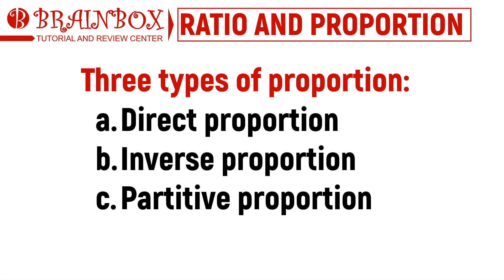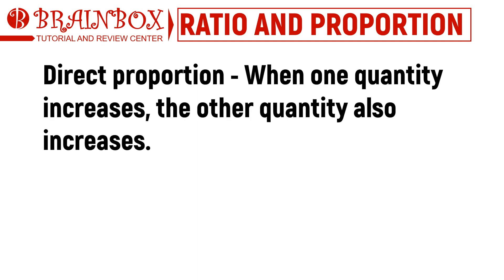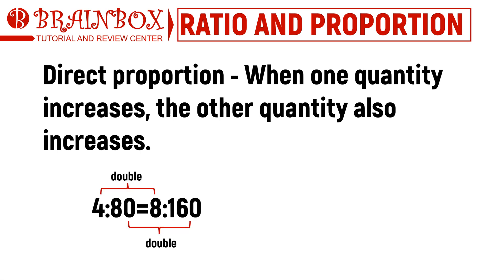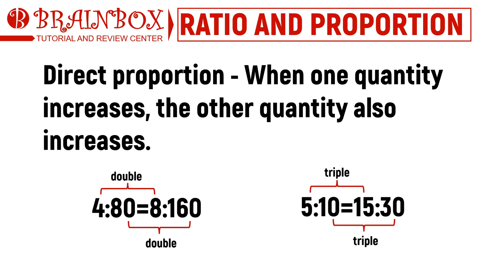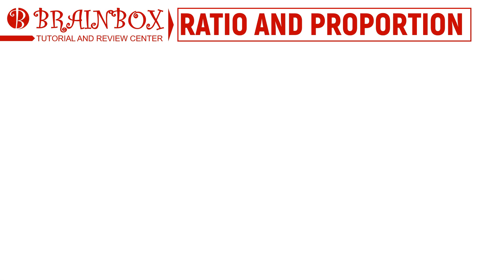In direct proportion, one quantity increases with the other quantity at the same rate and vice versa. For instance, if we double the quantity of one ratio in a proportion, the other quantity will double as well. The same is true if we triple the quantity of one ratio in a proportion. Here is an example for you.